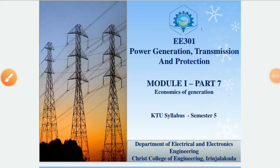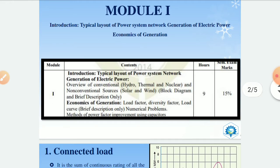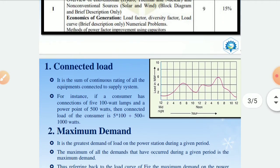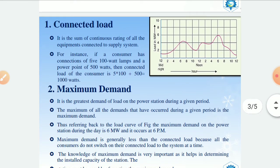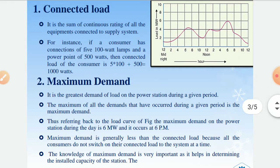Hi friends. Today we are moving into part 7 of module 1, in which we are going to deal with the economics of generation and some important terms used in it. This is part of the subject Power Generation, Transmission and Protection for 5th semester Electrical and Electronics Engineering students under the KTU syllabus. We have already covered the first half and now we are going into the economics of generation. We are going to study 5 important terms used in this field.